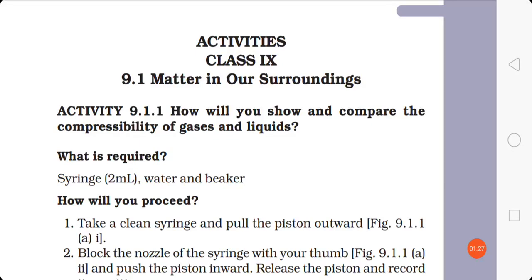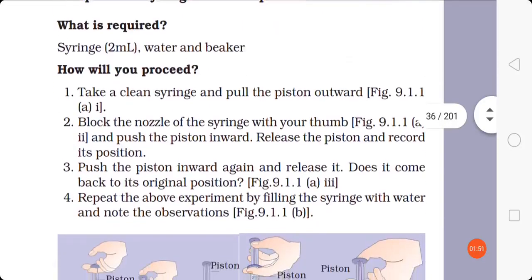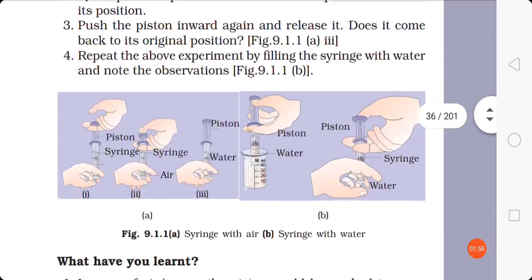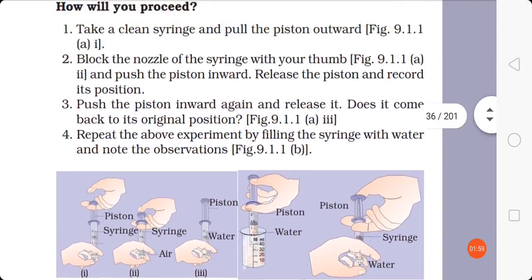In this activity, we will compare the compressibility of gases and liquids. What is required to perform this activity: a 2 ml syringe, water, and a beaker. Images are shown illustrating how to take all these things and perform this activity.